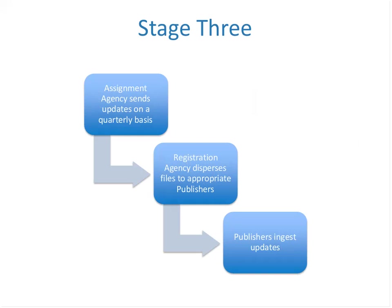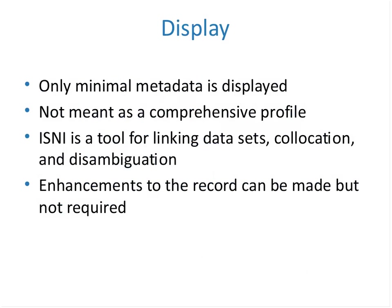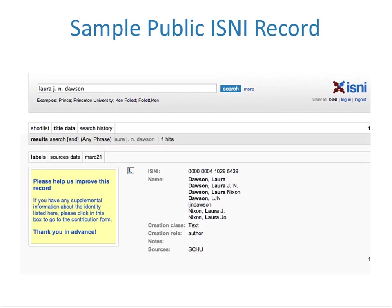To recap: the publisher submits data to the registration agent, which sends the file to the assignment agent. The assignment agency assigns as many ISNIs as it can, then sends the assigned file back to the registration agency, which disperses it to publishers for review, QA, and ingestion. There is also an update process for ISNIs that are still being researched — the assignment agency sends updates on a quarterly basis. In terms of what gets displayed in the ISNI public database, only minimal metadata is displayed because it's really meant as a tool for linking datasets, for co-location, for disambiguation, not as a comprehensive profile.